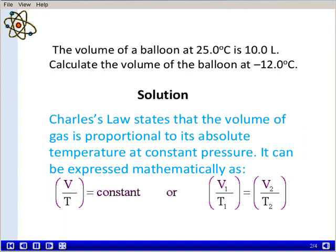The volume of a gas divided by the temperature of that gas is a constant. Or, V1 divided by T1 is equal to V2 divided by T2.